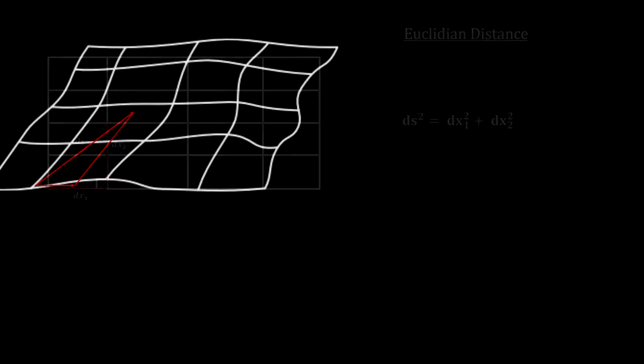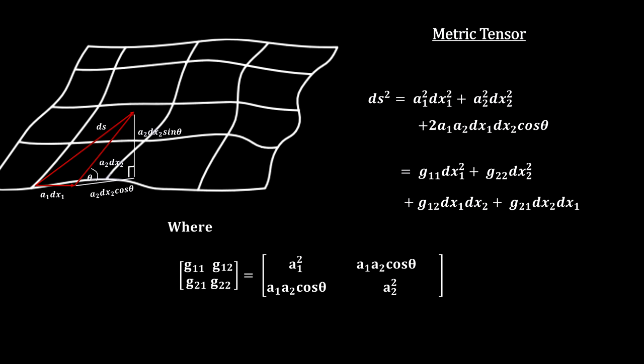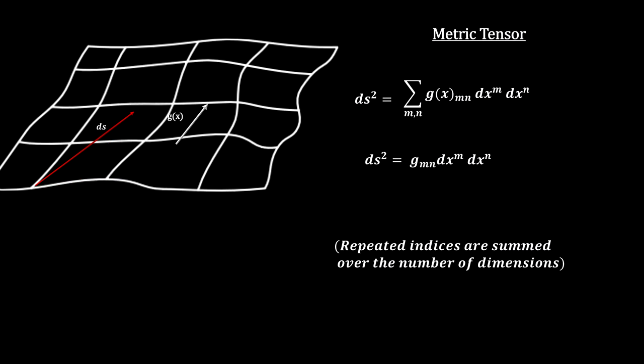We then generalize by adding coefficients to take into consideration the different scales or lines in different directions and the fact that the lines no longer cross to form right angles. This is called a metric tensor. And finally, we extend the number of dimensions and generalize the coefficients to be functions of a location to take into account curved and changing coordinate systems.